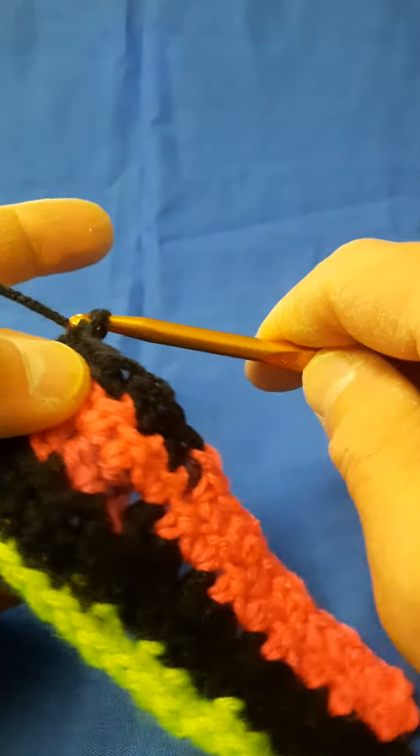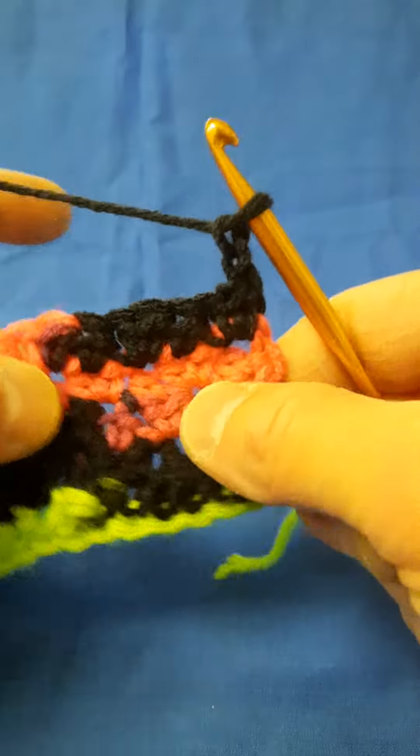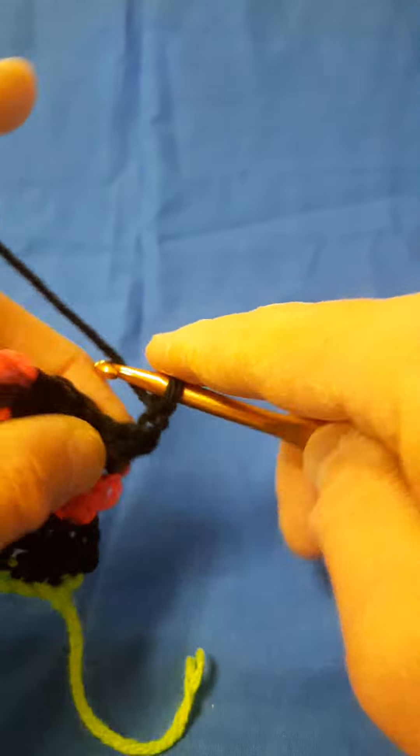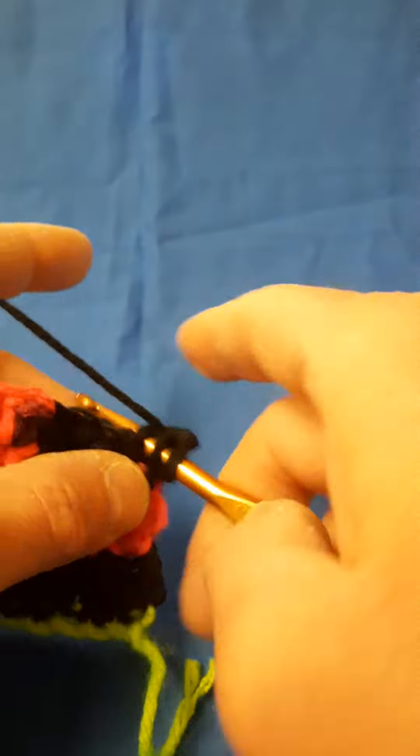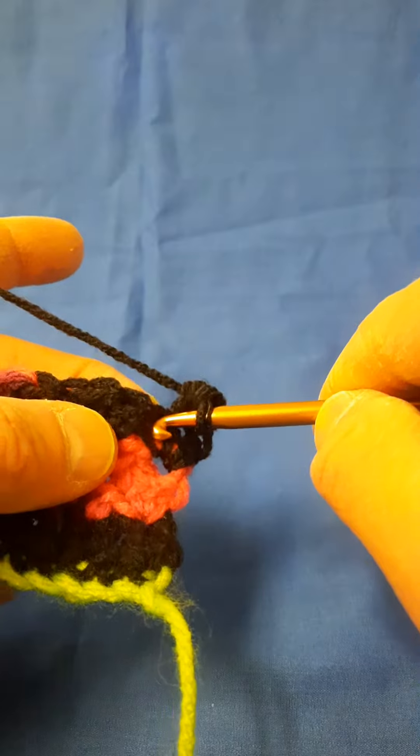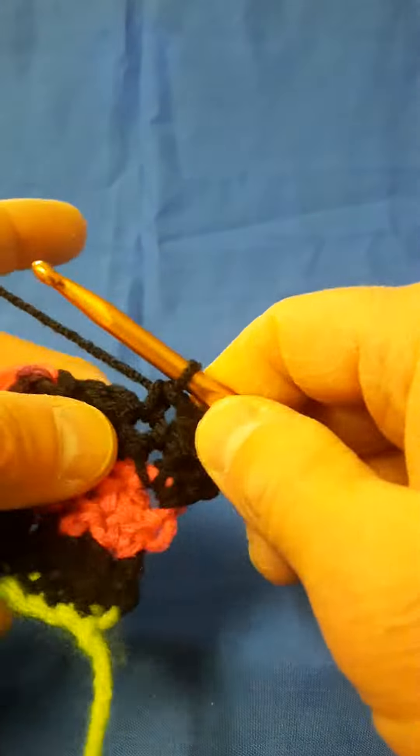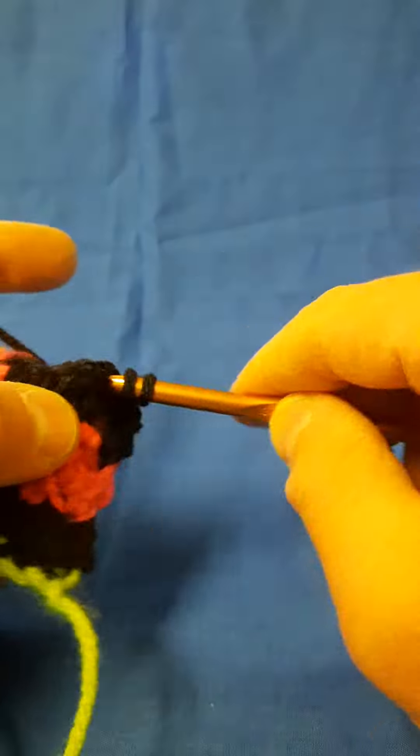Let's go ahead and get started with chain two and turning our work and getting a half double in our first stitch. Followed by skipping the stitch and back to our single crochet and our half double in the same stitch.